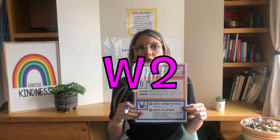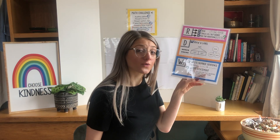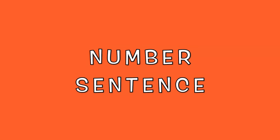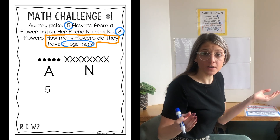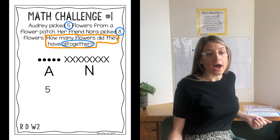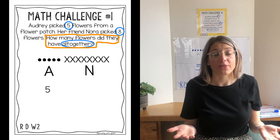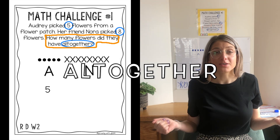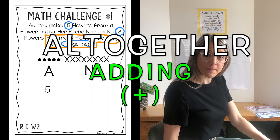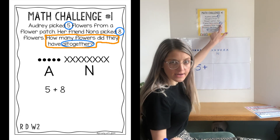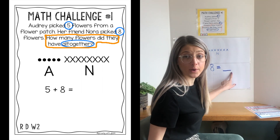Next step is W2. There are two things I need to do in this box. The W stands for write. The first thing I need to write is a number sentence. Just like our drawing, the number sentence goes right along with the problem. Audrey picked five flowers, so our first number is five. We decided we were adding because Audrey picked some flowers and Nora picked some, and our keyword 'all together' confirms we're adding. So I'll put my plus sign, then eight for Nora's flowers, then equals — here's where we put our total.